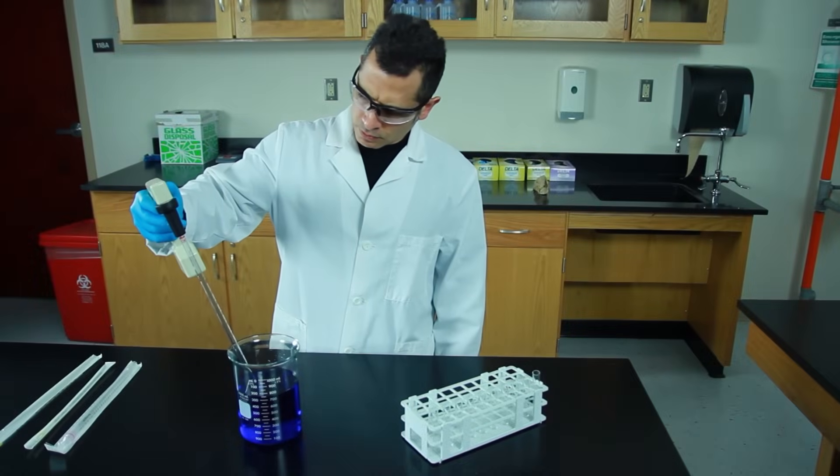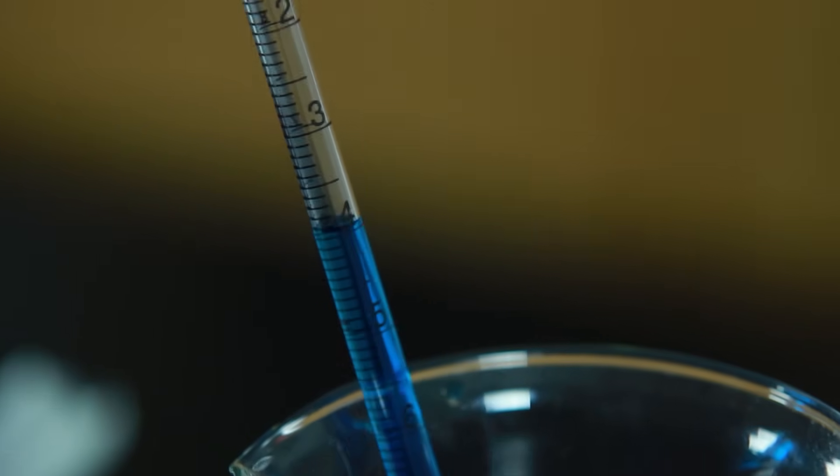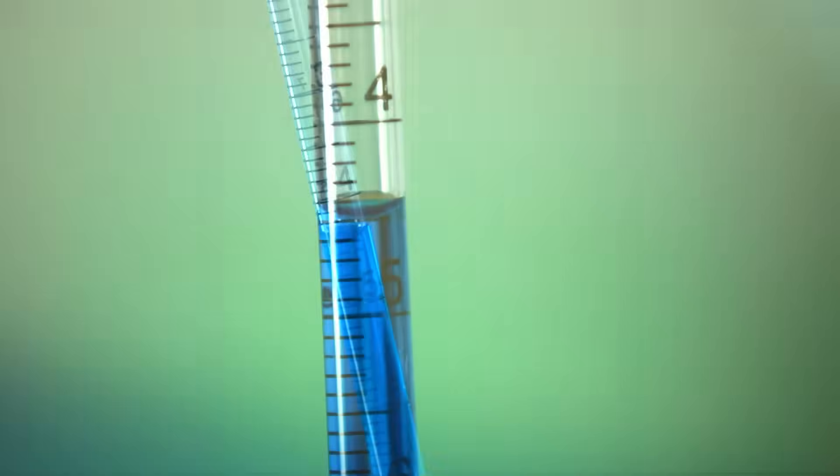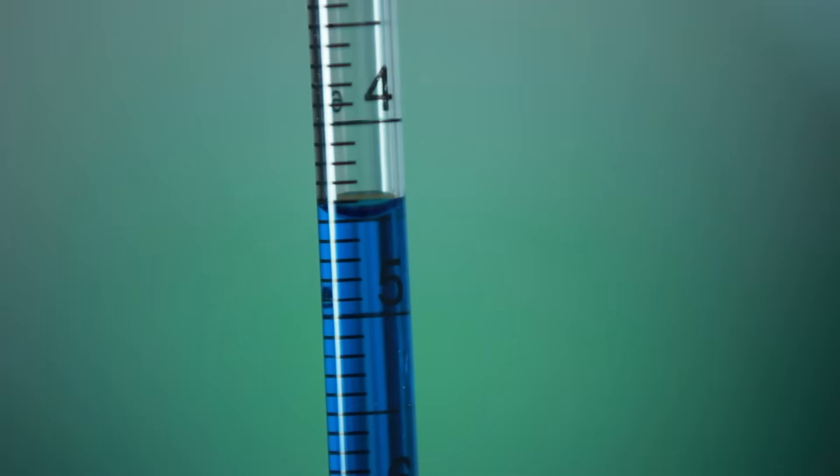Let's do an example. We need to draw up and deliver 5.5 milliliters of solution. Since we're using the scale that counts down 0 to 9, then we need to measure the meniscus at the 4.5 milliliter mark. This will actually give us 5.5 milliliters of solution.